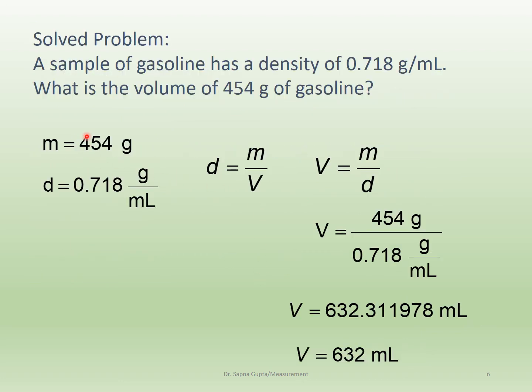Here's another problem: a sample of gasoline has a density of 0.718 g/mL. What is the volume of 454 grams of gasoline? Mass and density are given; we need to calculate the volume. Density equals mass over volume.